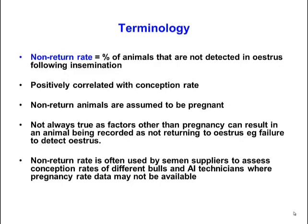Non-return rate is another term — this is the percentage of animals that do not return to estrus, or are not detected in estrus, following insemination. It is positively correlated with conception rate. The assumption is that cows that don't come back in heat are in fact pregnant. However, this is not always true, because a farmer may not detect cows returning to heat and simply assume they're pregnant.